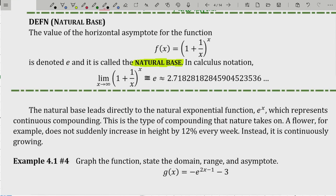The natural base leads directly to the natural exponential function e^x, which represents continuous compounding. This is the type of compounding that nature takes on. A flower, for example, does not suddenly increase in height by 12% every week. Instead, it is continuously growing. Nature goes through a continuous pattern of growth. Trees, plants, and people don't grow sporadically; we're continuously growing. On a molecular level we're discretely growing, but from our larger perspective, it's continuous growth.